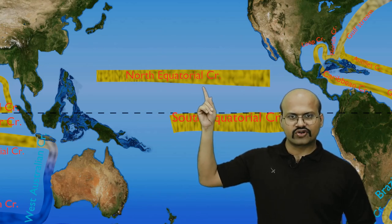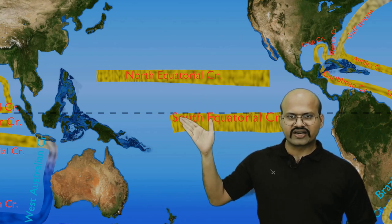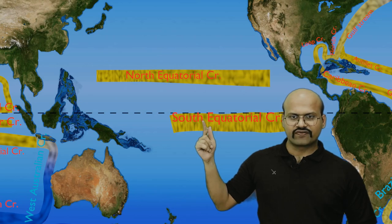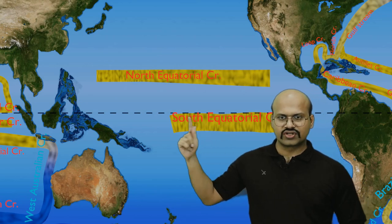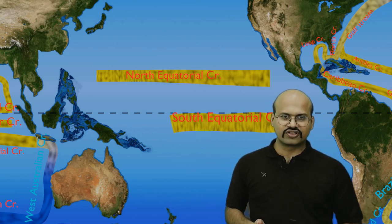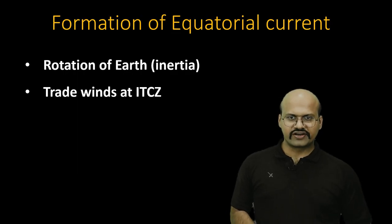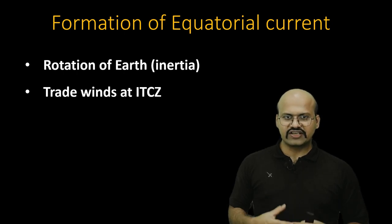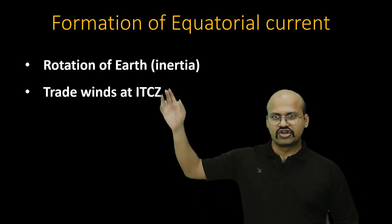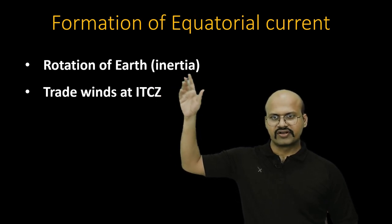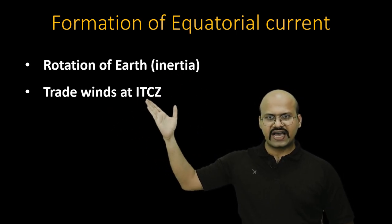The North Equatorial Current is a little away from the equator while the South Equatorial Current flows very close to the equator. We will see the reason for this later. The two major factors causing these equatorial currents are: one, the rotation of the earth and inertia of water, and two, trade winds at the ITCZ.